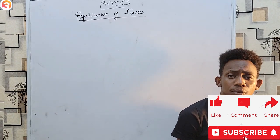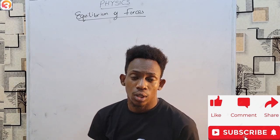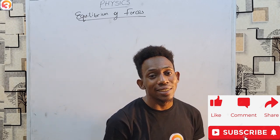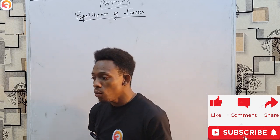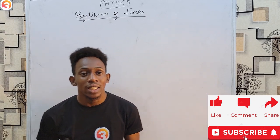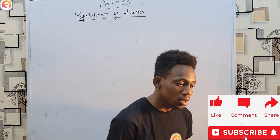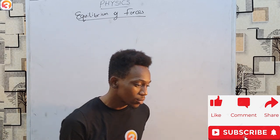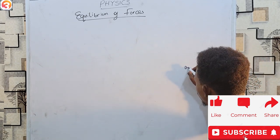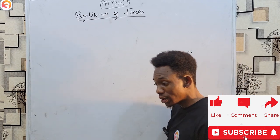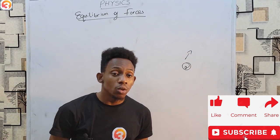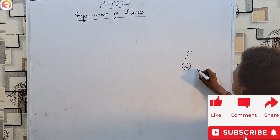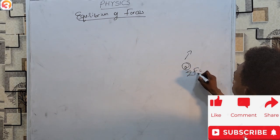So to start off, what does it mean when we say a body is in equilibrium? For a body to be in equilibrium, the sum of all forces acting on that body is zero — there is no net force acting on the body. As a result, any body in equilibrium will remain in its state of rest or uniform motion in a straight line, either stationary or moving in a straight line or around a circle with uniform velocity.